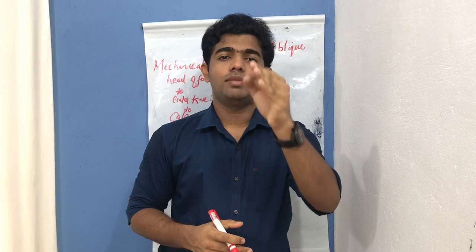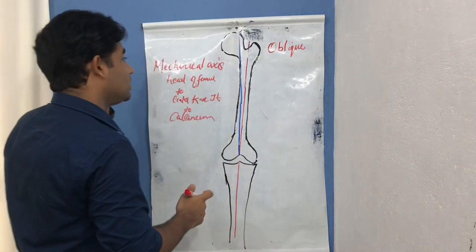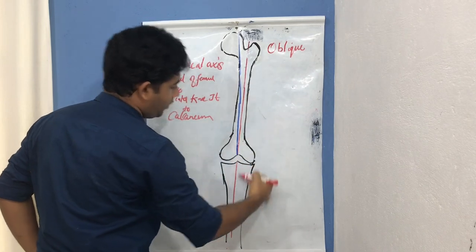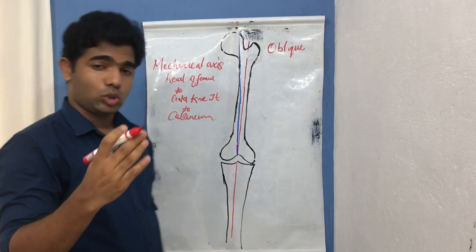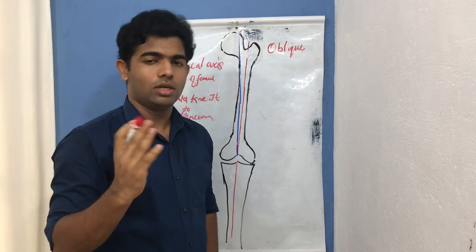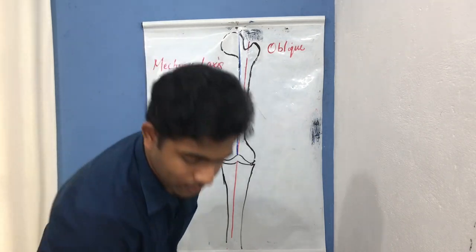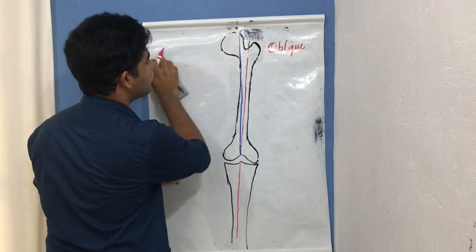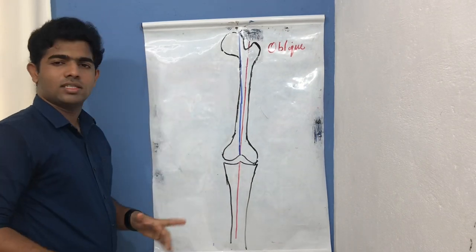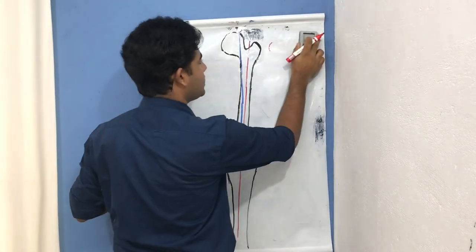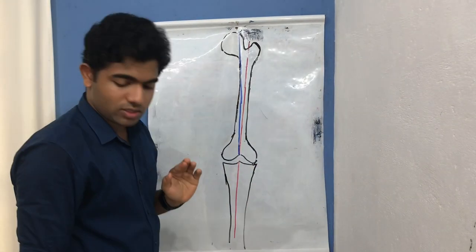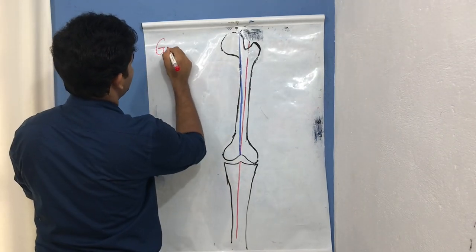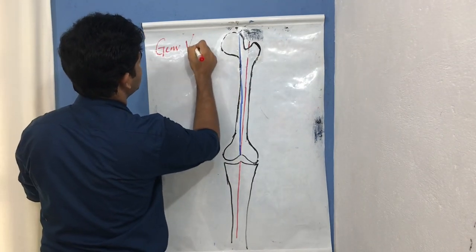The mechanical axis passes from the center of the head of the femur, through the center of the knee joint, to the center of the calcaneum — that is the weight-bearing line. So we have two important axes to remember: the longitudinal axis and the mechanical axis.